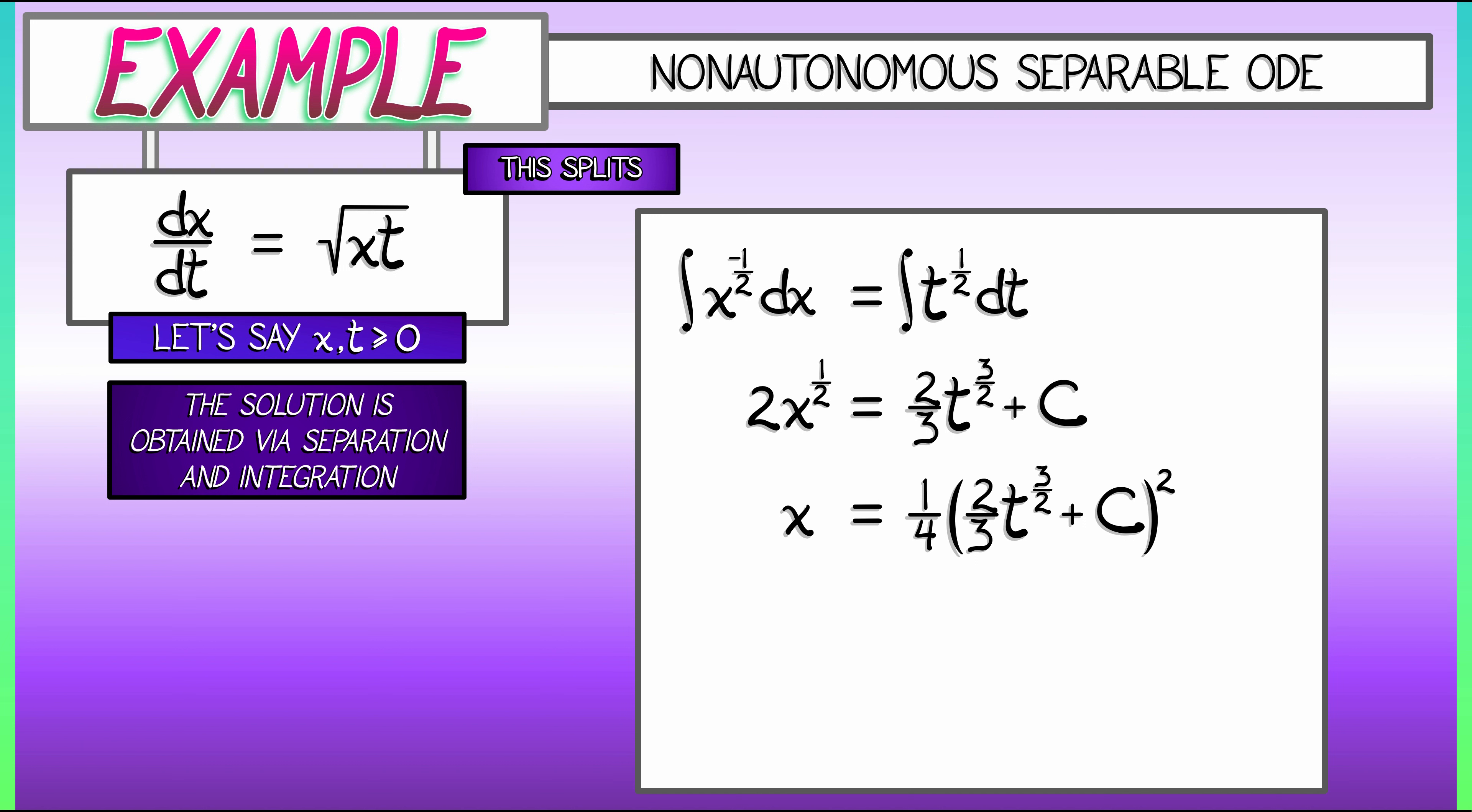Now, what is this constant c? Let's rewrite it in terms of the initial condition, x-naught. Substitute in t equals zero, and x equals x-naught. Solve for c, you will get that c is equal to the square root of four times x-naught. That means that our final answer, x, is one-quarter times quantity two-thirds t to the three-halves plus two times square root of the initial condition x-naught, all of that squared.